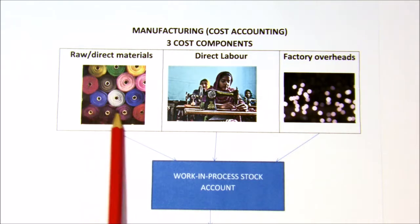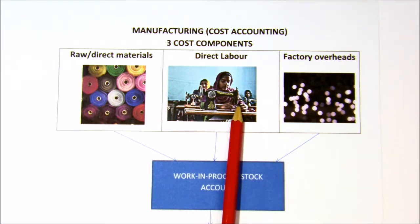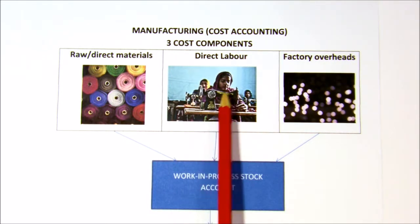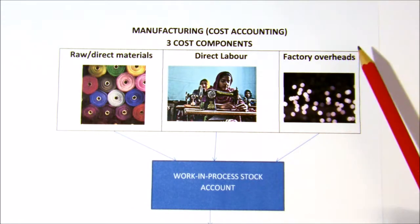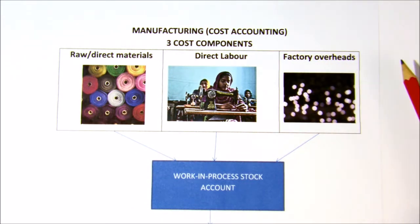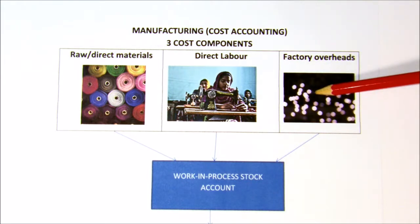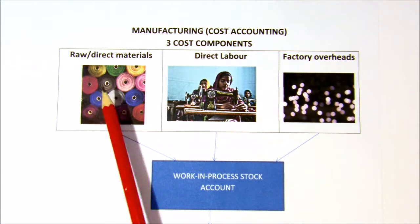That material then has to be converted, so you will have what we call the direct labor cost. These are the people who would be cutting, sewing, and packing — their job is directly involved with making the t-shirts. Then thirdly, the last of your costs is your factory overheads. These are other costs involved that are not directly found in your item, but include things like electricity, rent, depreciation, and consumable stores — all things needed to run the factory, very similar to a retailer who also has expenses to run.